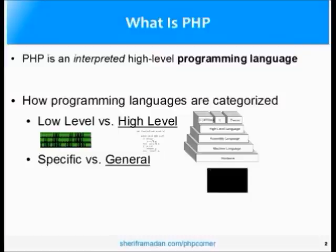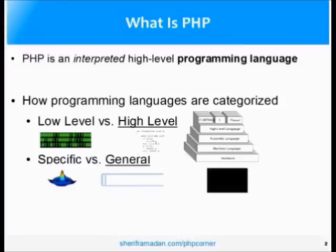There are also specific and general-purpose languages — we call this the domain of the language. A specific language, like MATLAB for example, is very good with matrices and vectors and doing scientific calculations very quickly, better than other high-level languages, but it's very specific to that domain. We'll be using a general-purpose language like PHP, which pretty much enables us to do anything we want — it's like going to Google.com and seeing that text box with the blinking cursor. You can pretty much type anything you want and search the web, not limited to any particular domain.